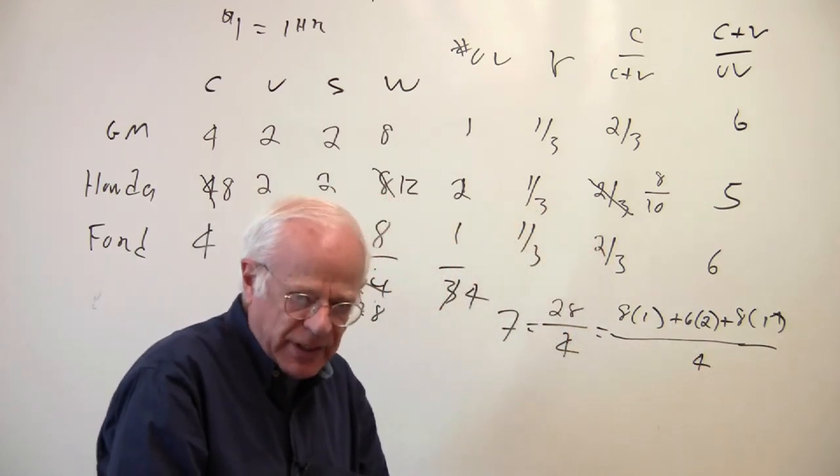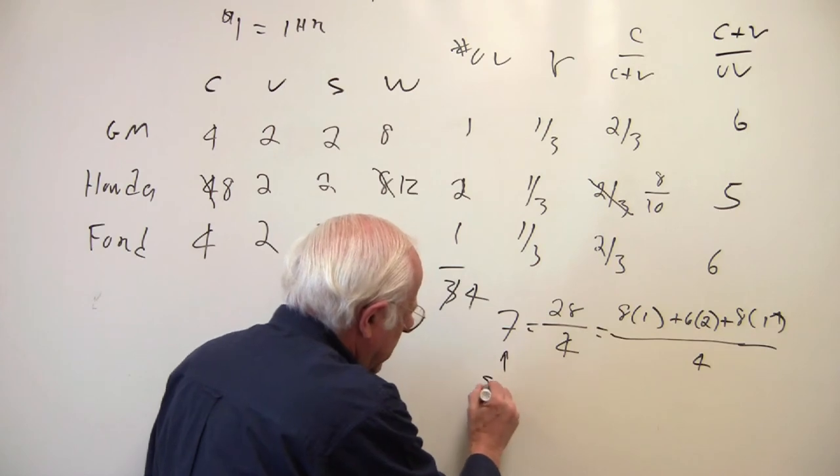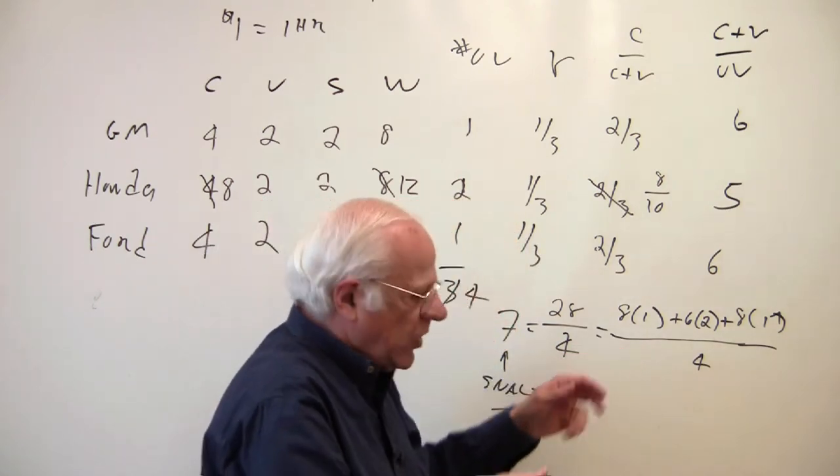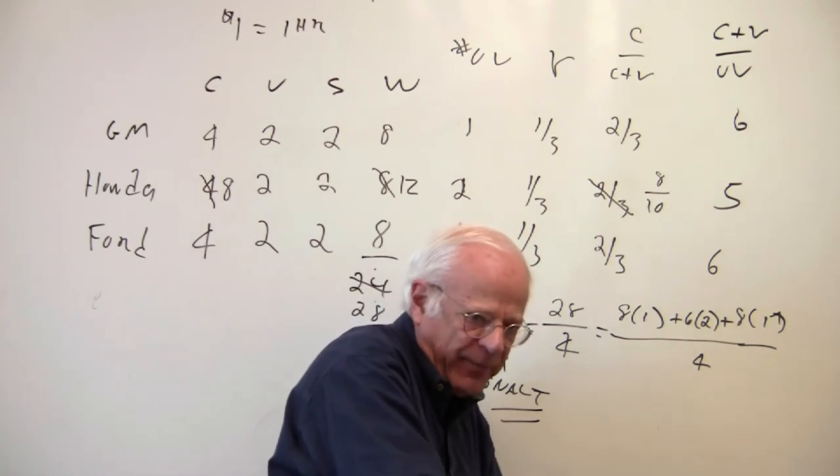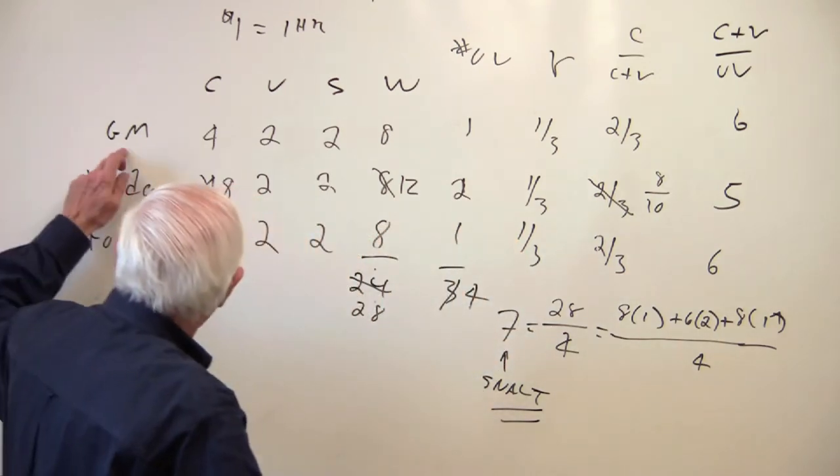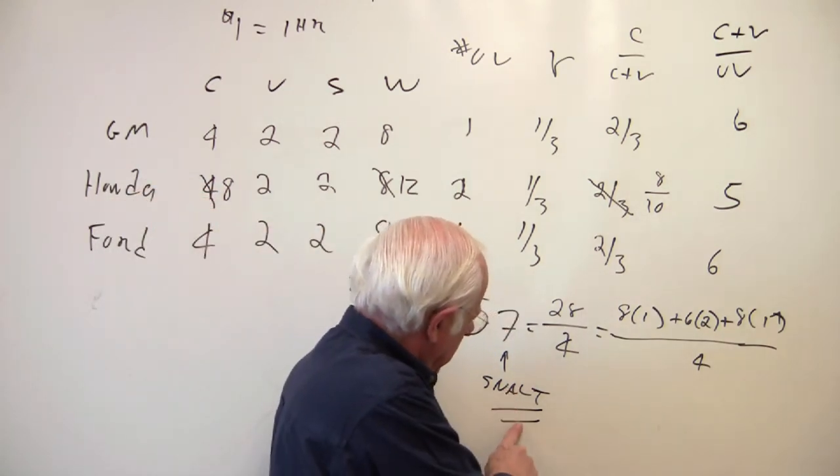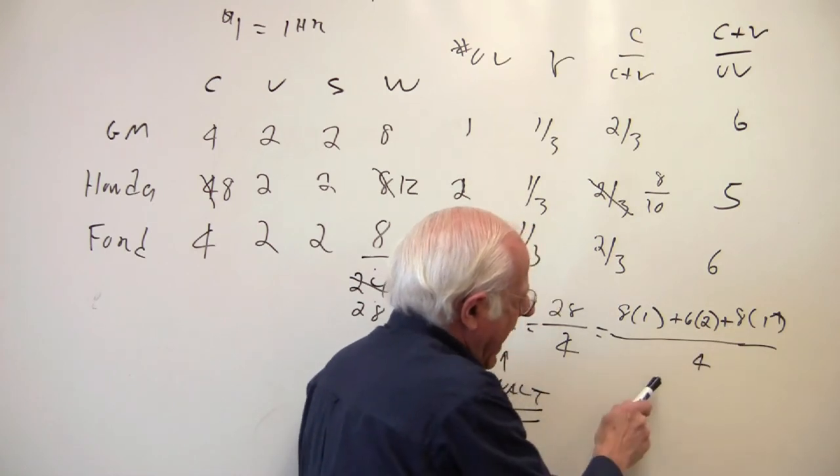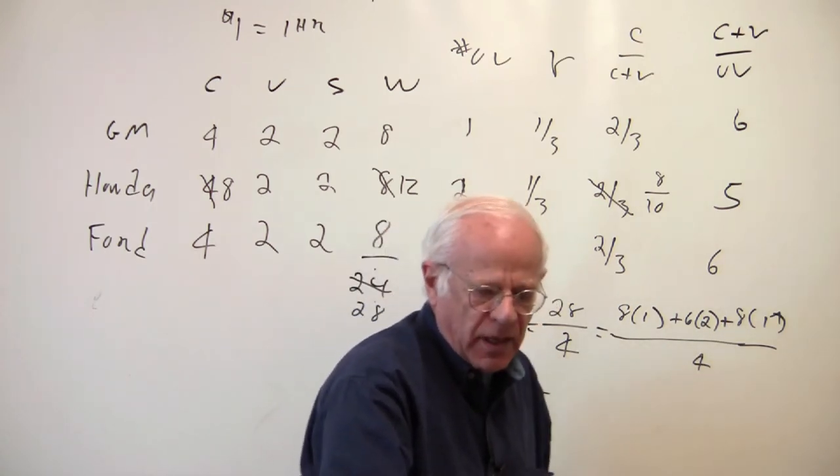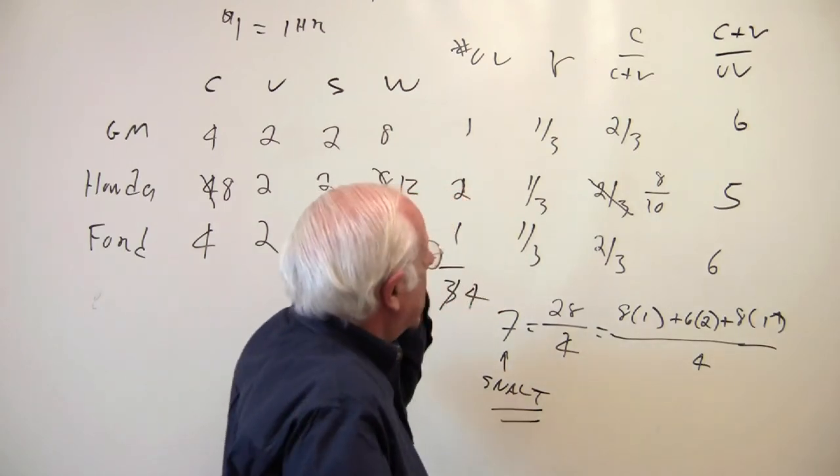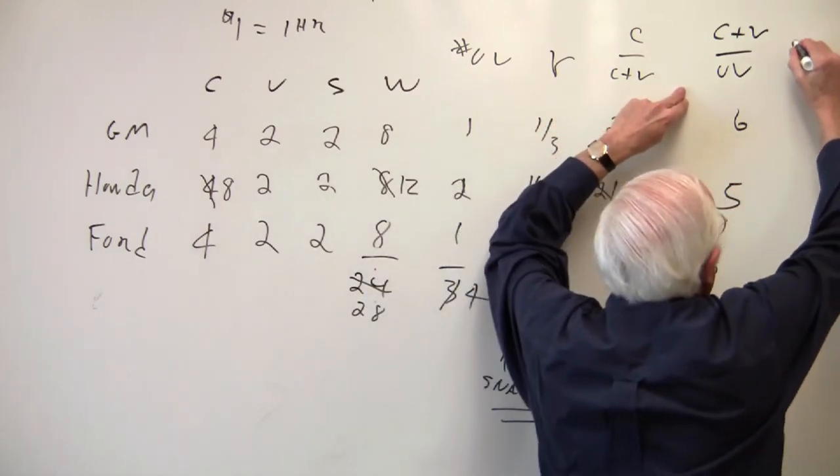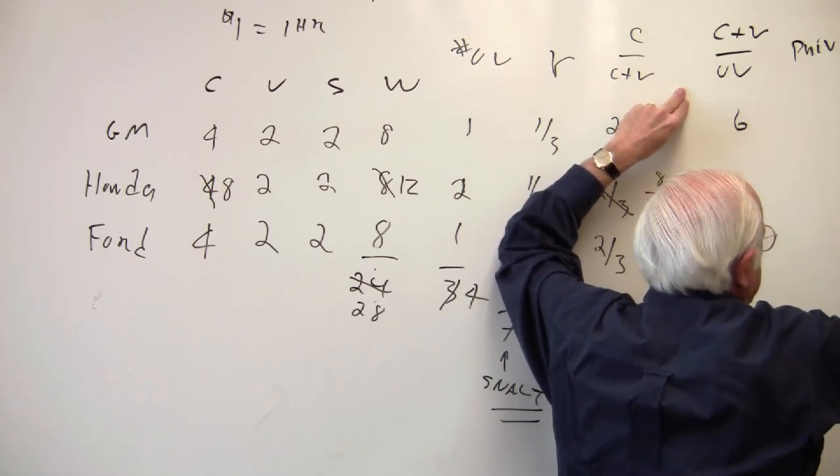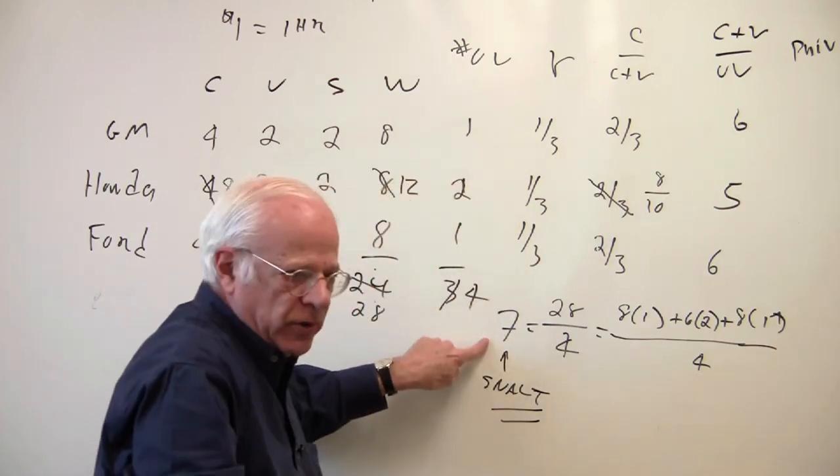So this is a weighted average. It's an average. And the seven, once again, is the socially necessary abstract labor time to produce a car. And what it averages over, as you can see, this goes back to several lectures, the concrete labor of each of these private capitalist producers, GM, Honda, and Ford in this particular industry. So this is the weighted average. That's what socially necessary abstract labor time is in this example I'm giving you, the concrete labors averaged over all the different quantities produced in this particular industry.